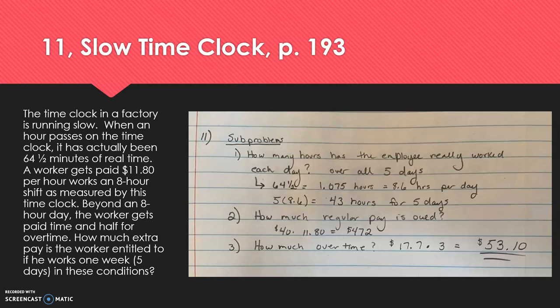Let's look at some possible sub-problems. Number one, how many hours has the employee really worked each day according to this faulty clock? And then another sub-problem that would accompany that is how many hours has that employee really worked over all five days? So for the first portion of this, let's transform that 64 and a half minutes to hours. So that extra four and a half minutes is really 0.075 hours. And when you multiply that by eight, that gives you 8.6 hours per day. So they're really working 8.6 hours per day times five days. That employee is really working 43 hours for five days and is entitled then to three extra hours of pay at the time and a half rate.